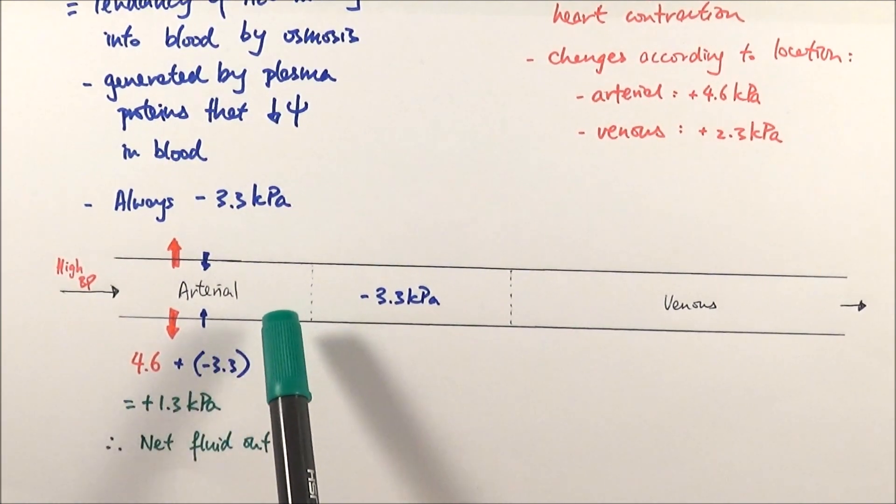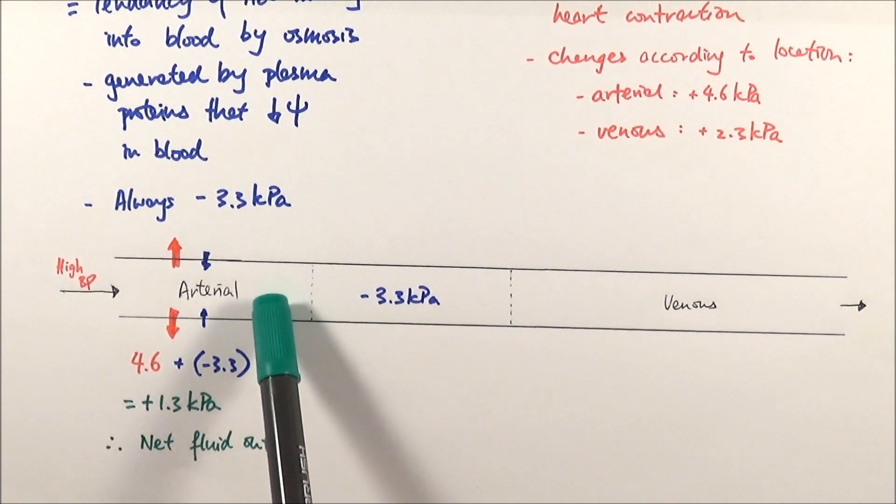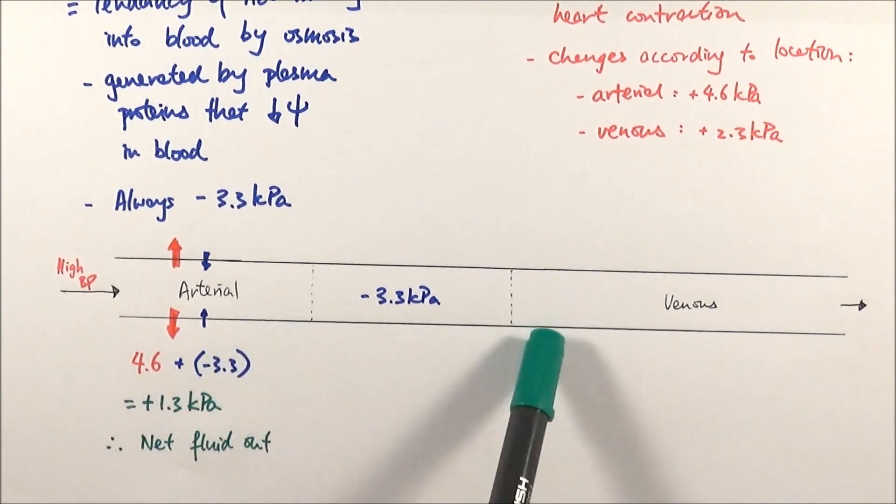The plasma containing all the oxygen and glucose will leave the blood capillaries forming tissue fluid, allowing the nutrients to diffuse into the cells so they get the stuff they need. The blood continues to travel along. There's no net movement here—it's equalized filtration pressure.